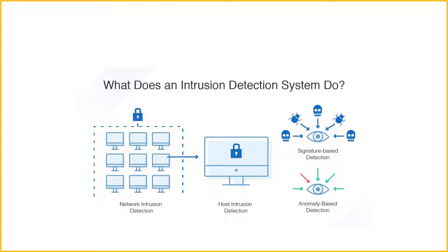Once malware or other malicious content has been identified, a signature is generated and added to the list used by an IDS solution to test incoming content. This enables an IDS to achieve a high threat detection rate with no false positives, because all alerts are generated based upon detection of known malicious content.